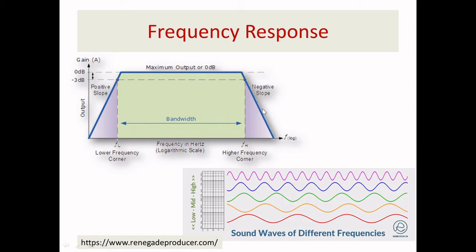At higher frequencies, there is also a gain dip due to internal junction capacitance. A transistor is basically two back-to-back diodes: one junction between base and emitter, and another between base and collector. The capacitance effect at these junctions dominates at higher frequencies and appears in parallel with the junction.